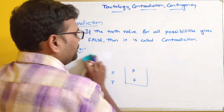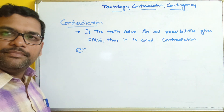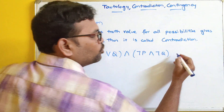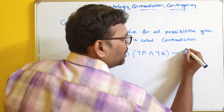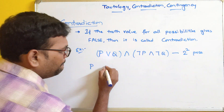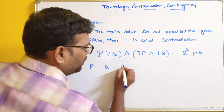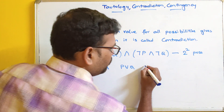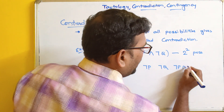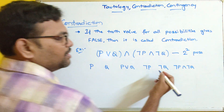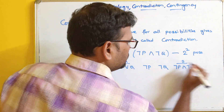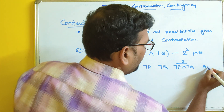Let us take one more example with two propositions, giving 2^2 = 4 possibilities. We write columns P, Q, then A = P ∨ Q, then ¬P, ¬Q, B = ¬P ∧ ¬Q, and finally A ∧ B.